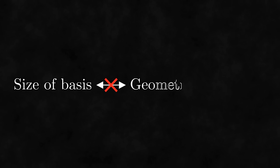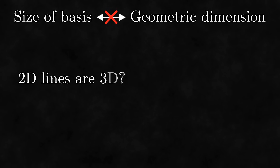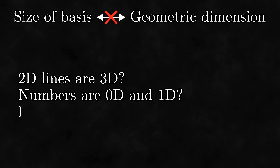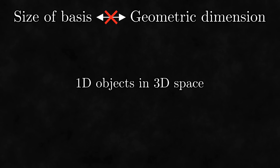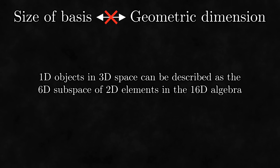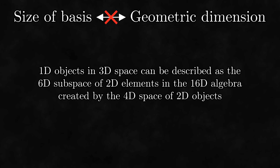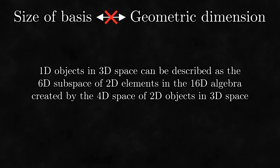However, there is one important point that I want to make through all of these examples. Oftentimes, the definition of dimension I gave in this video doesn't really match what we geometrically think of as dimension. Two-dimensional lines are three-dimensional? That's just ridiculous! We'll also see in the next chapter that there's a way in which numbers are zero-dimensional, not one-dimensional. The whole idea of infinite-dimensional spaces just sounds preposterous. This overloading of the term dimension is even worse in geometric algebra. There is a sense in which the statement '1D objects in 3D space can be described as the 6D subspace of 2D elements in the 16D algebra created by the 4D space of 2D objects in 3D space' is true. I cherry-picked this example and worded it this way because of how ridiculous it sounds, but it still showcases an unfortunate problem: the word dimension is used for too many things.